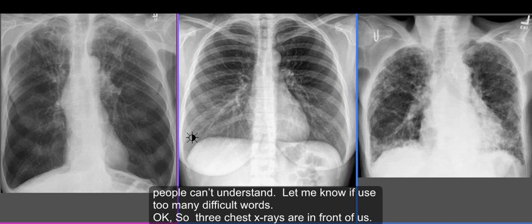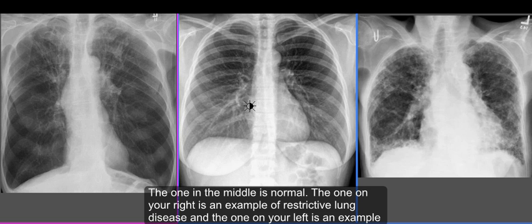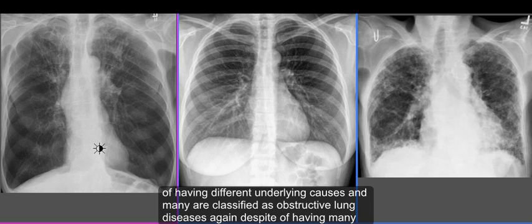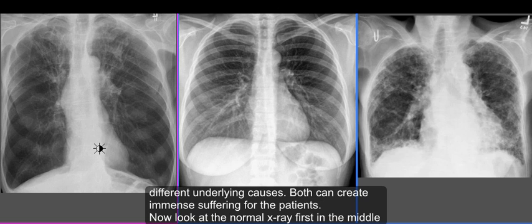Three chest X-rays are in front of us. The one in the middle is normal, the one on your right hand side is an example of restrictive lung disease, and the one on your left is an example of obstructive lung disease. Under a wider umbrella, many lung conditions are classified as either obstructive or restrictive lung diseases, despite having different underlying causes, and both can create immense suffering for patients.